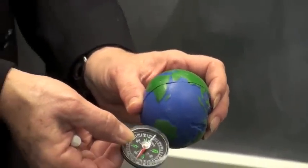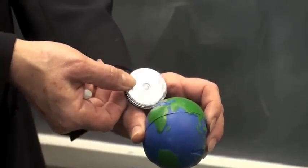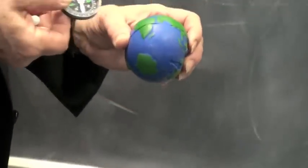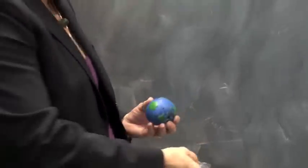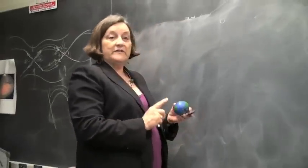Everywhere on Earth, the compass turns so that it's pointing along the direction of the magnetic field. That tells you the magnetic field at the surface,